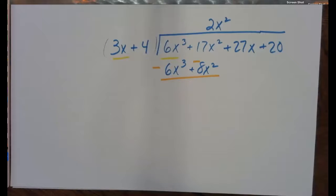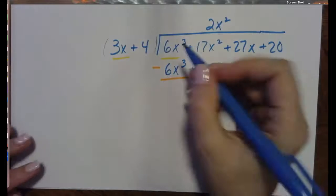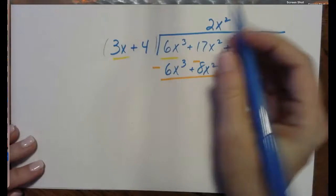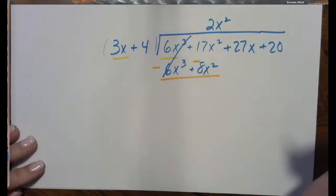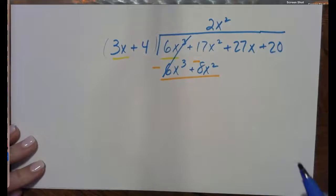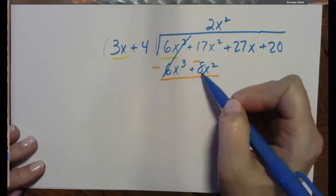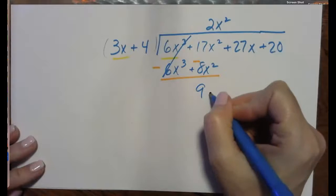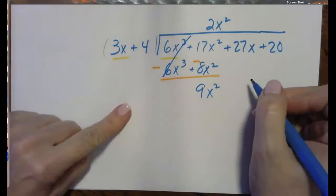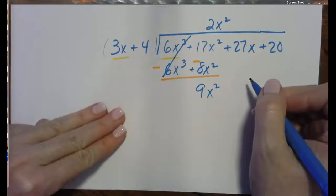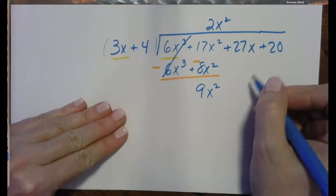2x squared times the 4 plus 8x squared. And we will draw the line and change all the signs. Changing the signs is what allows us to subtract. 6 minus 6. This first column must cancel completely every single time. 17 and a negative 8 is 9x squared. We divided, we multiplied, we've subtracted.